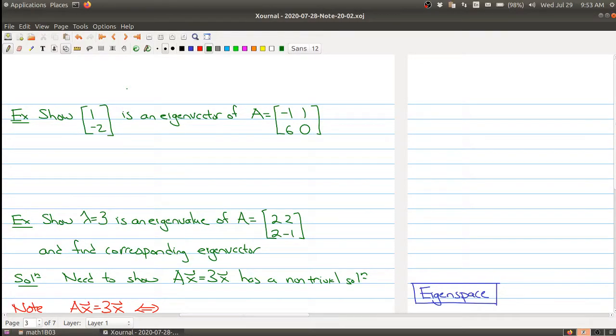In the first part of today's lecture I defined what an eigenvector is and an eigenvalue. Now we want to get used to checking whether you have an eigenvector or finding these values. We're going to first start with just checking whether something is an eigenvector or not.